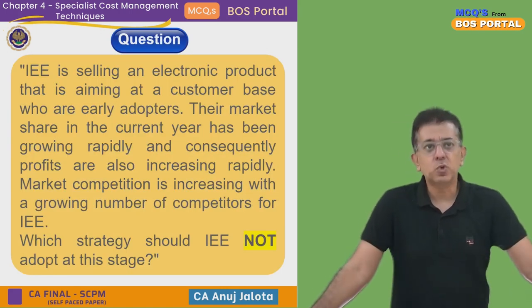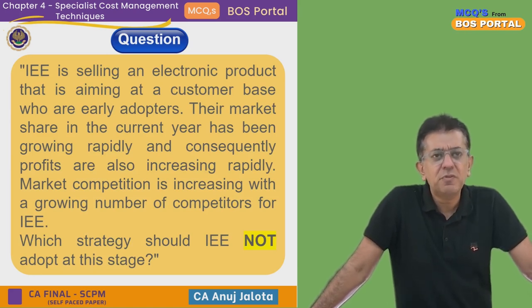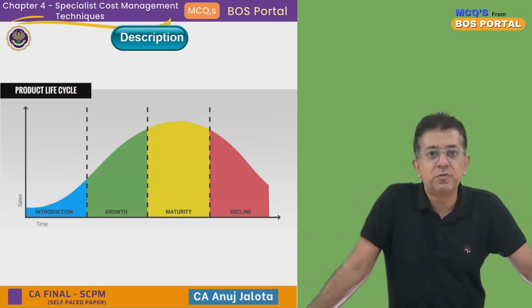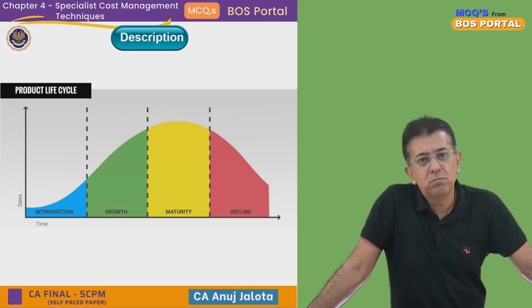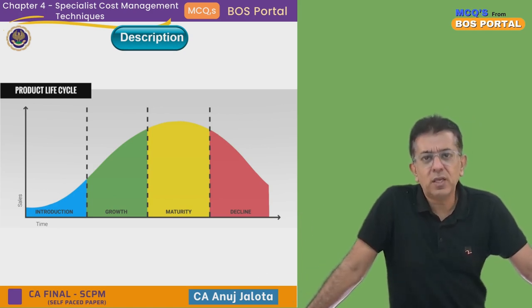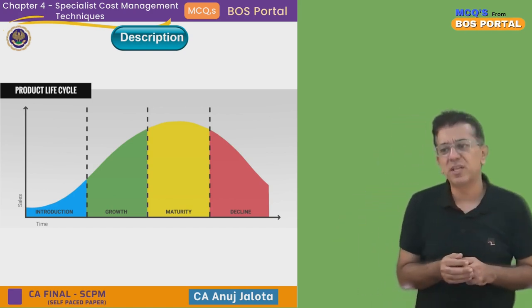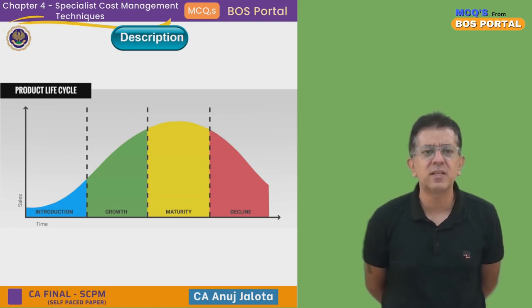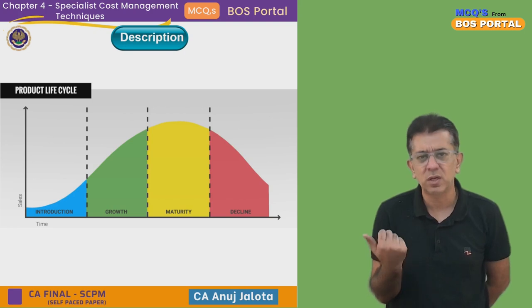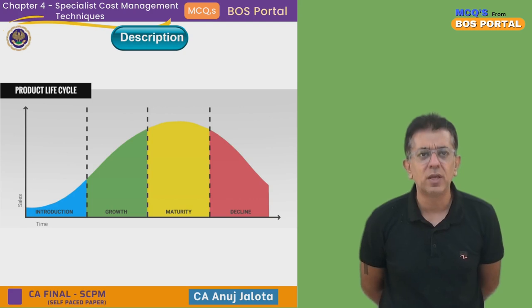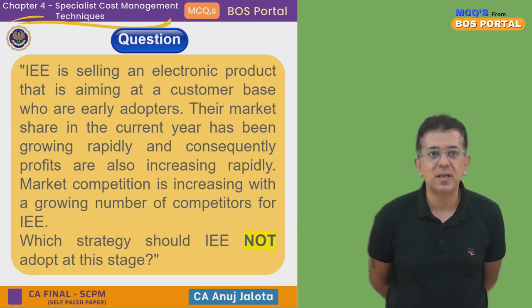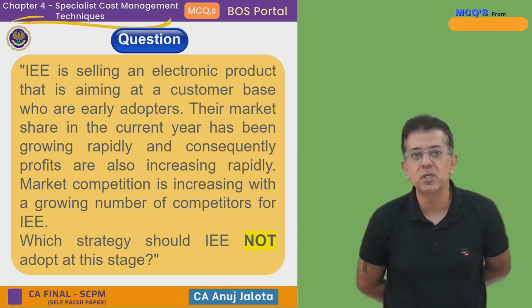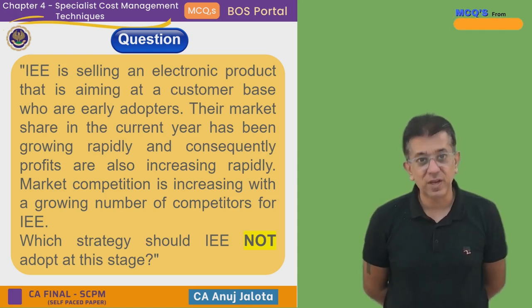Let me come back to the question. The key thing is to identify which stage the company is currently in. There are four stages in the product life cycle: Introduction stage, where the company has just launched the product; Growth stage, where demand has started to come, and with success come profits and competition; Maturity, the peak stage where markets are saturated and many players compete for profits; and Declining stage, where very few customers remain. Given that market share is growing rapidly and profits are increasing, this hints that we are in the growth stage.